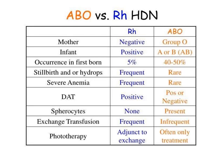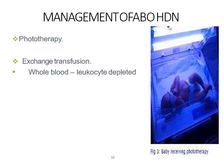A direct anti-globulin test can be positive for both. Spherocytes are not seen in Rh incompatibility but may be seen in ABO. Blood transfusion is often required in Rh incompatibility due to the severity of anemia and jaundice, while in ABO it is infrequent. Phototherapy — exposing the child to light of certain wavelengths — helps convert unconjugated bilirubin to a form that can be easily excreted. For exchange transfusion, leukocyte-depleted blood is used to prevent graft-versus-host disease, since the newborn's immune system is immature.